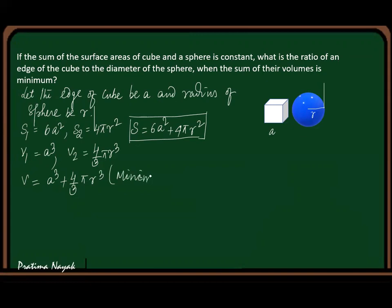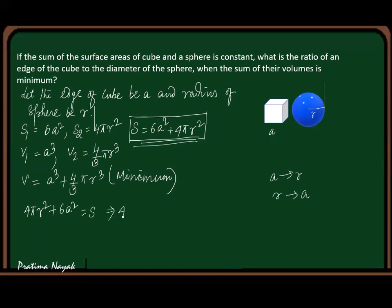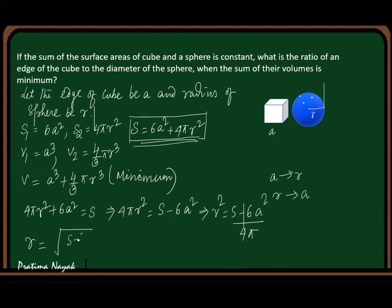Minimum means its derivative is 0. So either you convert A in terms of R or R in terms of A. Using the surface area constraint: 4πR² + 6A² = S, so 4πR² = S − 6A², giving R² = (S − 6A²) / (4π). Therefore R = √[(S − 6A²) / (4π)], which simplifies to √(S − 6A²) / (2√π).